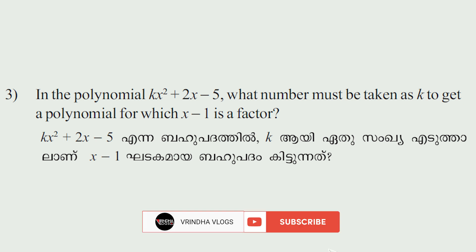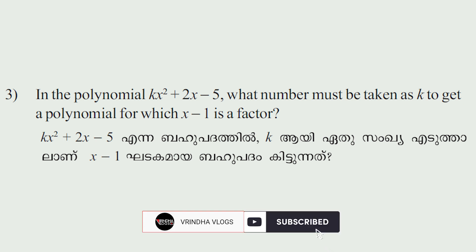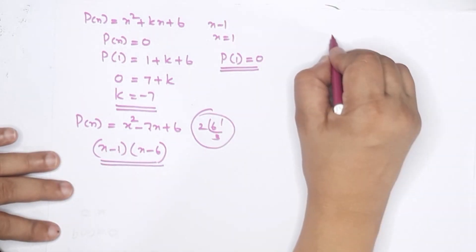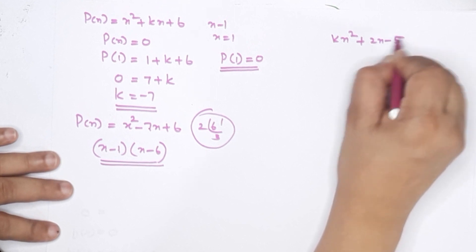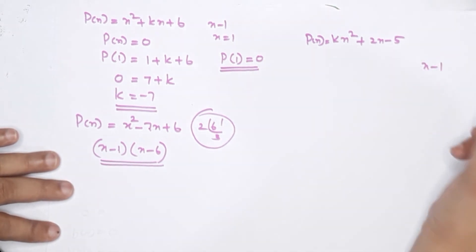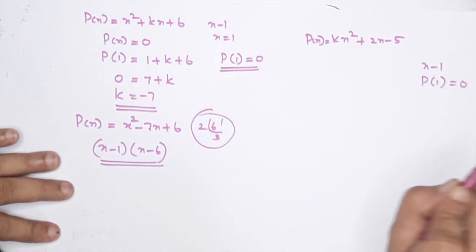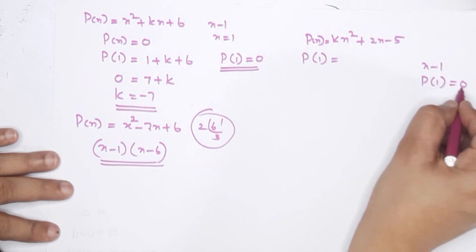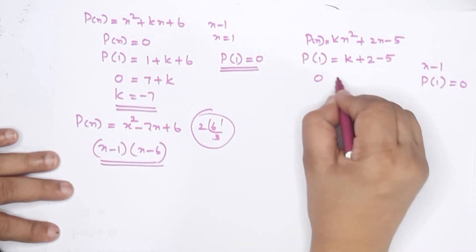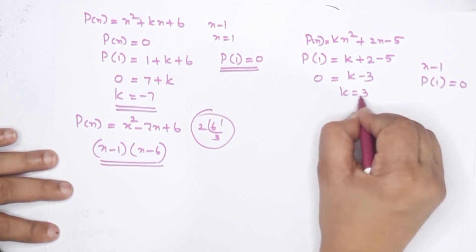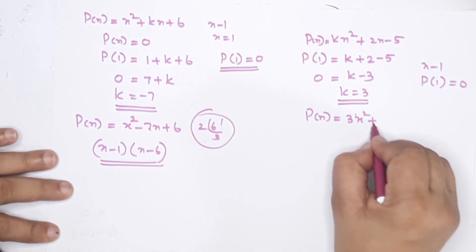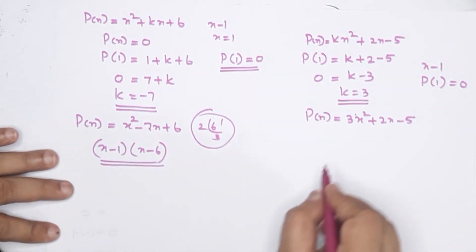Last question: in the polynomial kx squared plus 2x minus 5, what number must be taken as k so that x minus 1 is a factor? Since x minus 1 is a factor, P of 1 equals 0. Substituting: k times 1 plus 2 minus 5 equals 0, that is k minus 3 equals 0, so k equals 3. Then P of x equals 3x squared plus 2x minus 5. This is the polynomial.